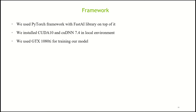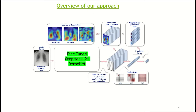We used a GTX 1080 Ti for training our model. This is the overview of our approach: the end user inputs an image, which goes to our pre-trained model — a stacked Xception129 ensemble. This is only the feature-extracting module shown here. It then makes predictions, which is basically a multi-label output corresponding to each of the disease labels associated with the chest X-ray, along with a corresponding heat map.